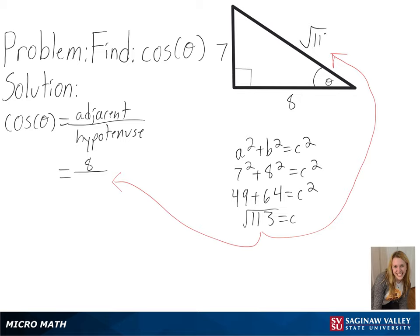After simplifying, we will get 8 times the square root of 113 over 113 as our final answer.